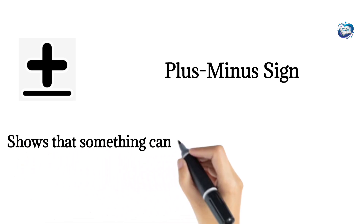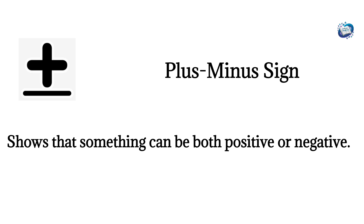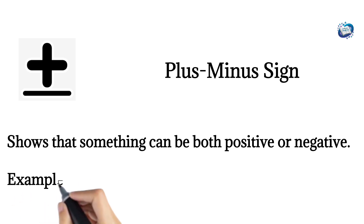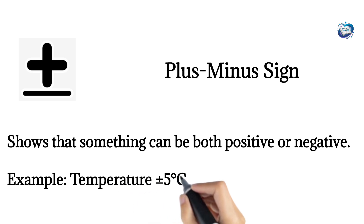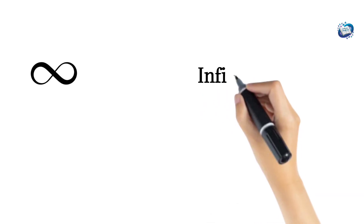Plus-minus sign. Shows that something can be both positive or negative. Example: temperature ±5 degrees Celsius means five degrees more or less.